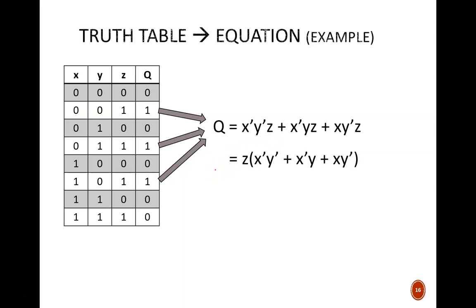From there, we simplify by applying some Boolean algebra rules. My approach is shown here. First, I factor out a z from each min term. Then, I factor out an x prime from these first two product terms. Y prime or y equals 1. So this simplifies to x prime. By rule 11,